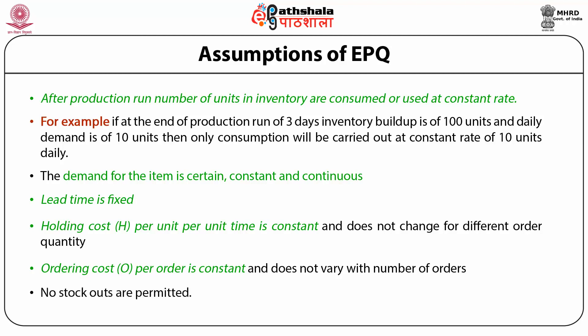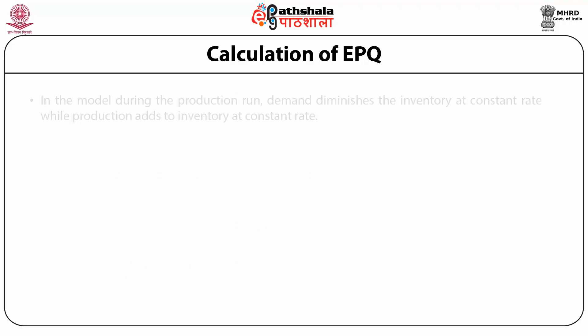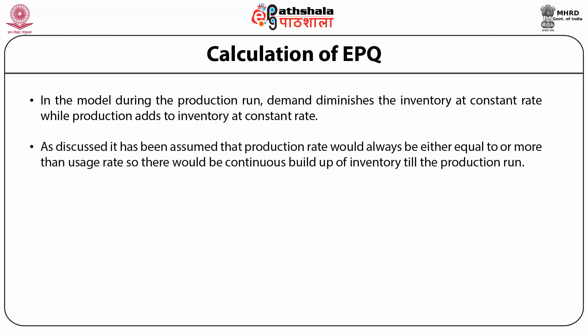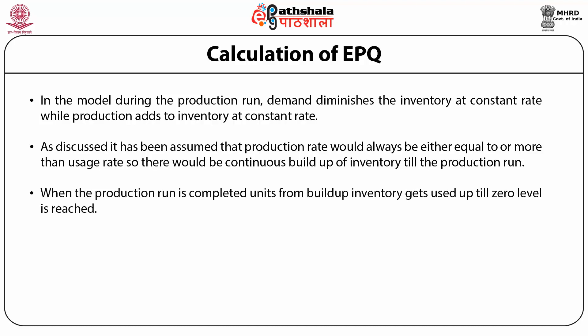No stock-outs are permitted. Calculation of EPQ. In the model, during the production run, demand diminishes inventory at a constant rate while production adds to inventory at a constant rate. It is assumed that production rate is always greater than or equal to usage rate, so there would be continuous buildup of inventory during the production run. When the production run is completed, units from the buildup inventory get used up until zero level is reached, and then the entire process is repeated again.